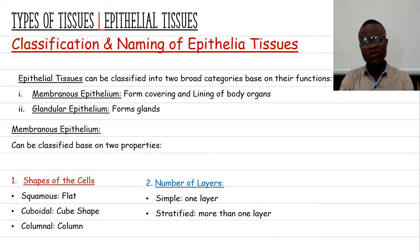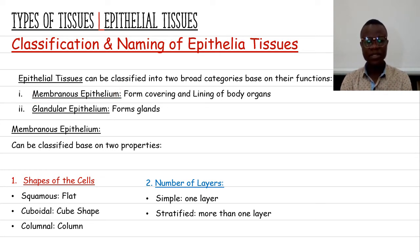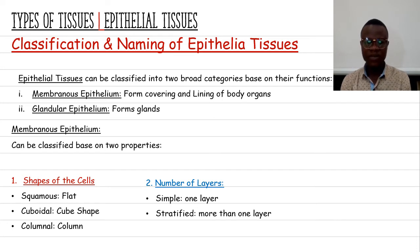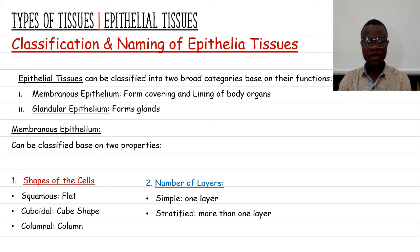Now we move on to the classification and naming of epithelial tissue. Epithelial tissue can be classified into two broad categories. The first is the membranous epithelium, which forms the covering of most organs and the lining of hollow or visceral organs. The second is the glandular epithelium, which forms most of the glands in the human body. For this tutorial we will focus on membranous epithelium.